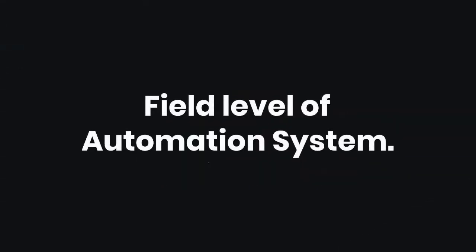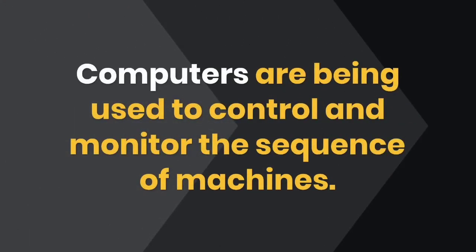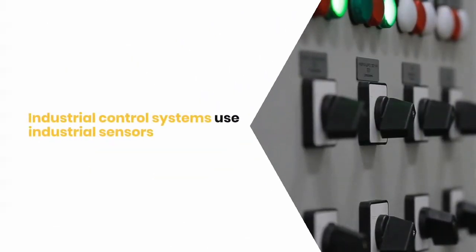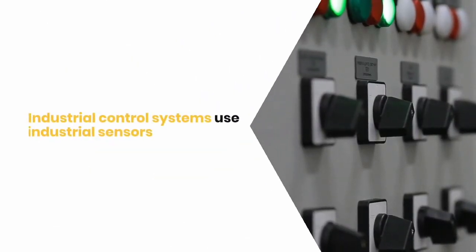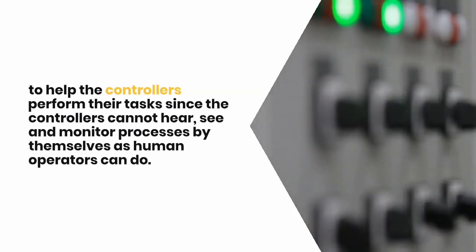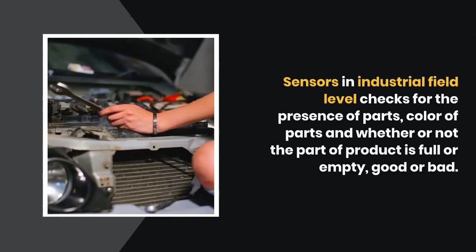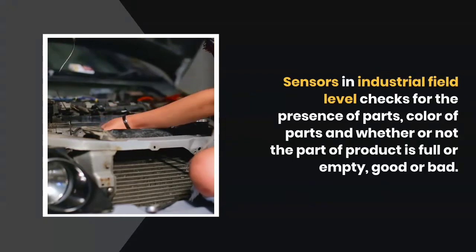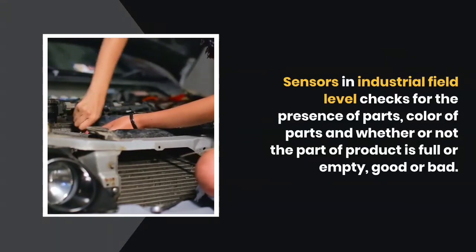At the field level of the automation system, computers are used to control and monitor the sequence of machines. Industrial control systems use industrial sensors to help the controllers perform their tasks, since the controllers cannot hear, see, and monitor processes by themselves as human operators can. Sensors at the field level check for the presence of parts, color of parts, and whether a product is full or empty, good or bad.